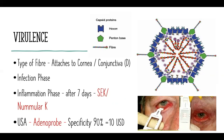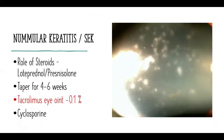In the US there is something called the AdenoPlus probe, similar to a card test like a pregnancy test. It is a cheap test available for ten dollars, with a high specificity of 90%, and within 10 minutes you get the result of whether the conjunctivitis is caused by adenovirus or not.